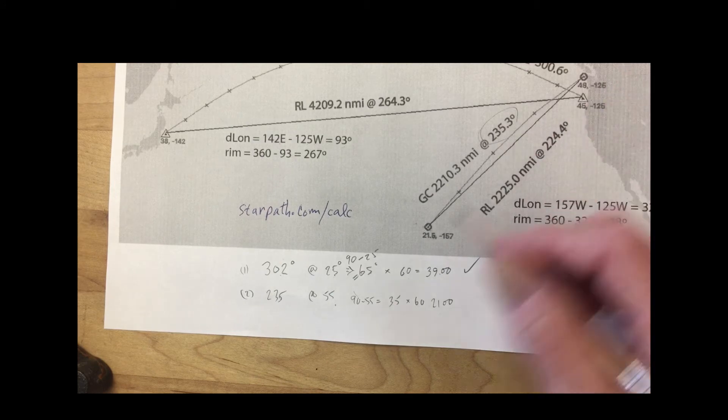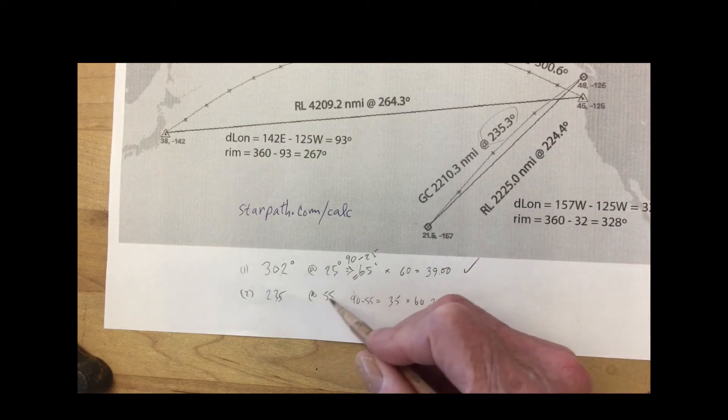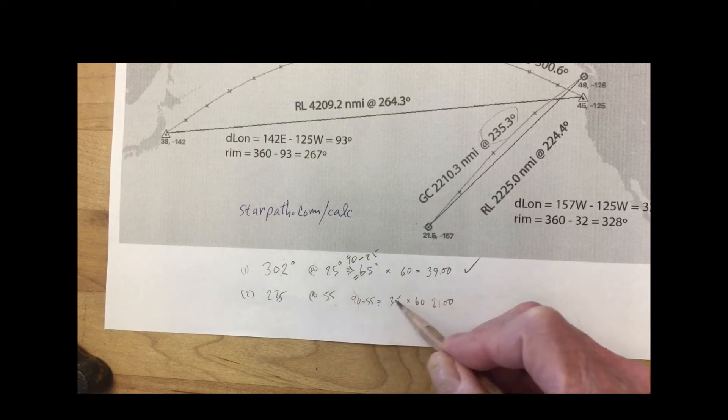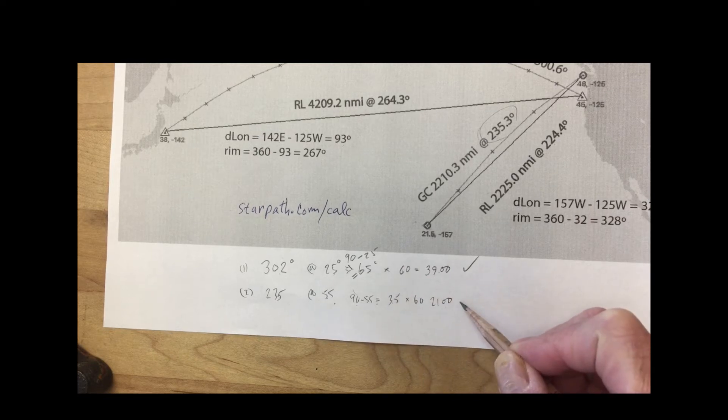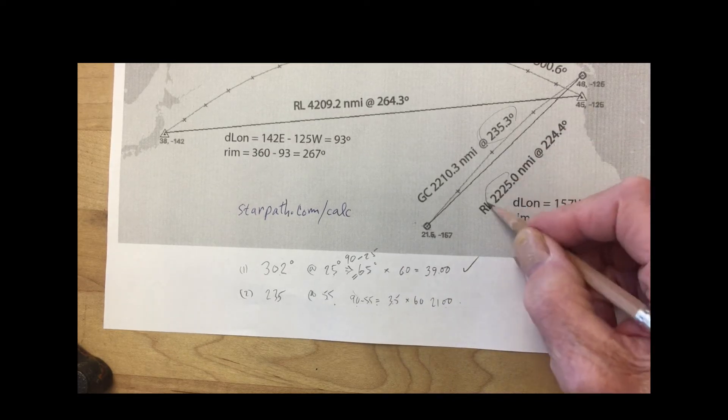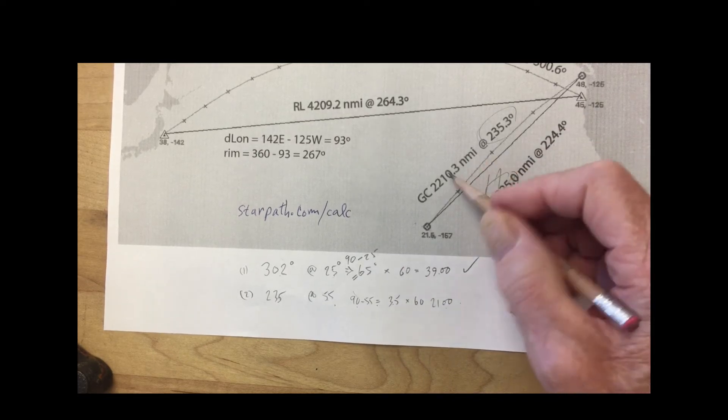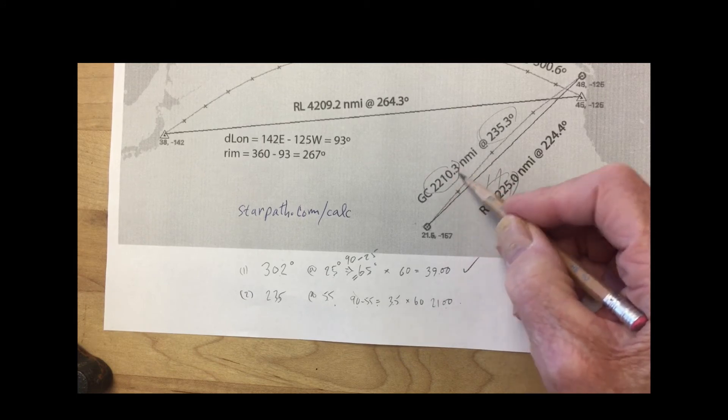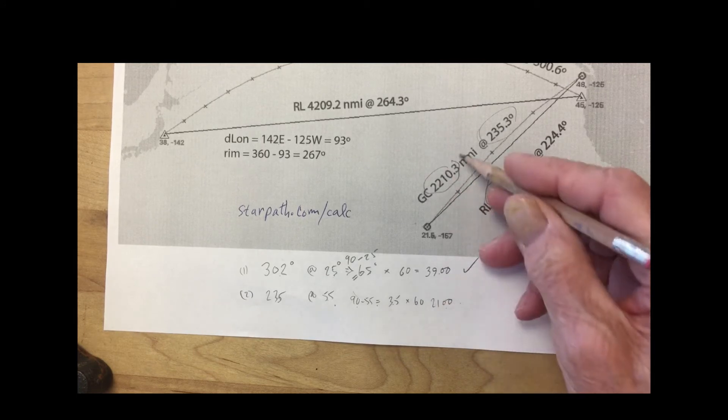So it's 235, that's bang on the right answer here. And then 90 minus 55 is 35 times 60, 2100. So the right answer is 2210, we get 2100. So the distance is off, but the distance really never matters in this. What matters is the heading.